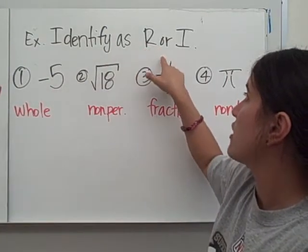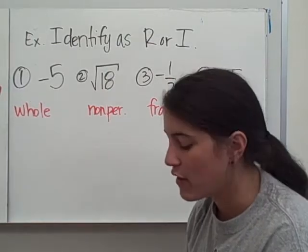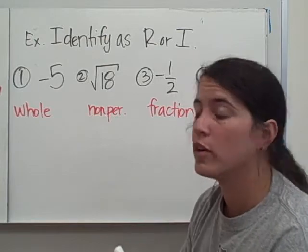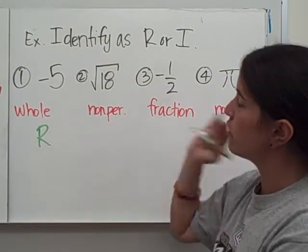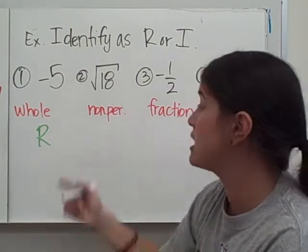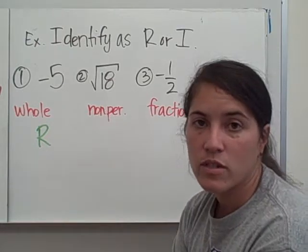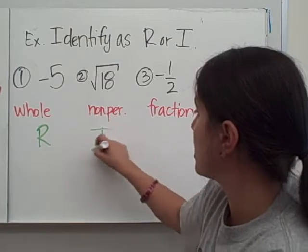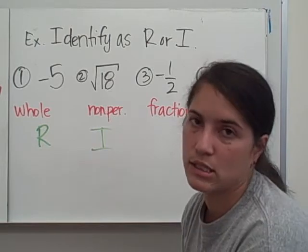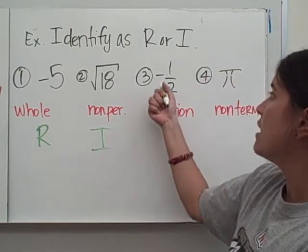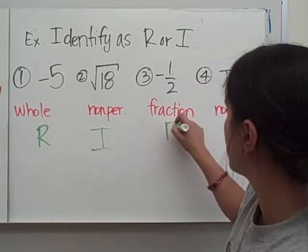Some examples identifying as rational or irrational. The first one: negative 5. Negative 5 is a whole number, and we know that whole numbers are rational. Number 2: square root of 18. 18 is a non-perfect square, so taking the square root of a non-perfect square is irrational — if you typed it in a calculator you'd get a decimal that doesn't repeat and doesn't end. Negative one-half: it's a fraction, and any fraction, both positive and negative, is going to be rational.